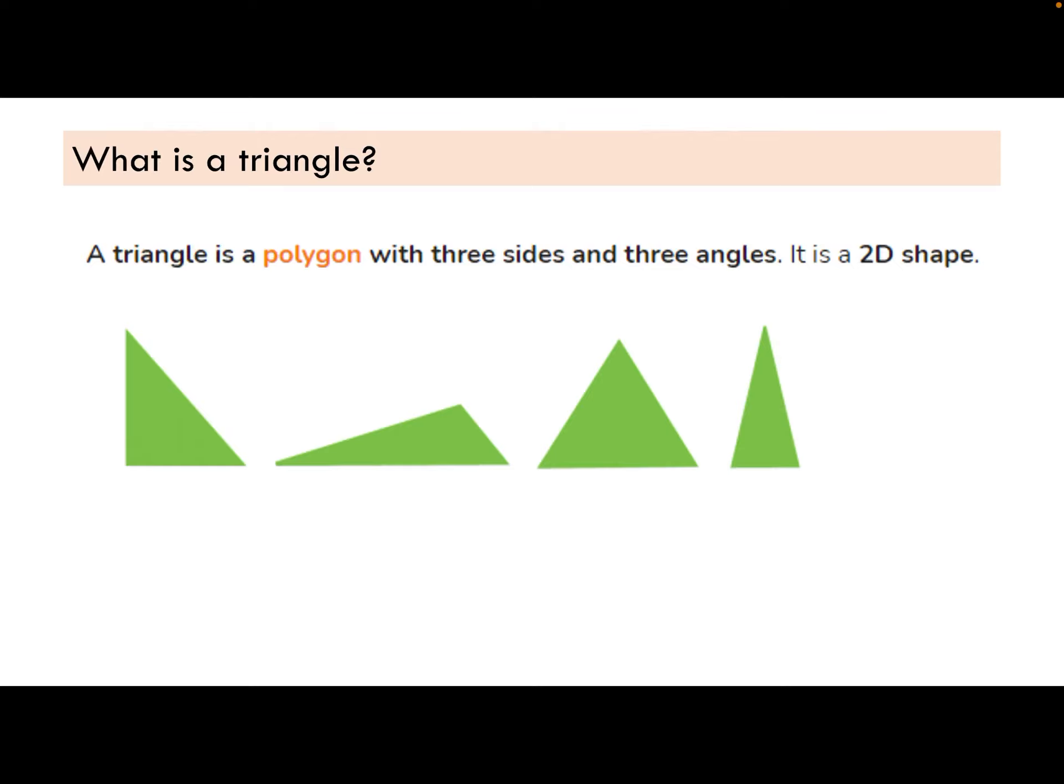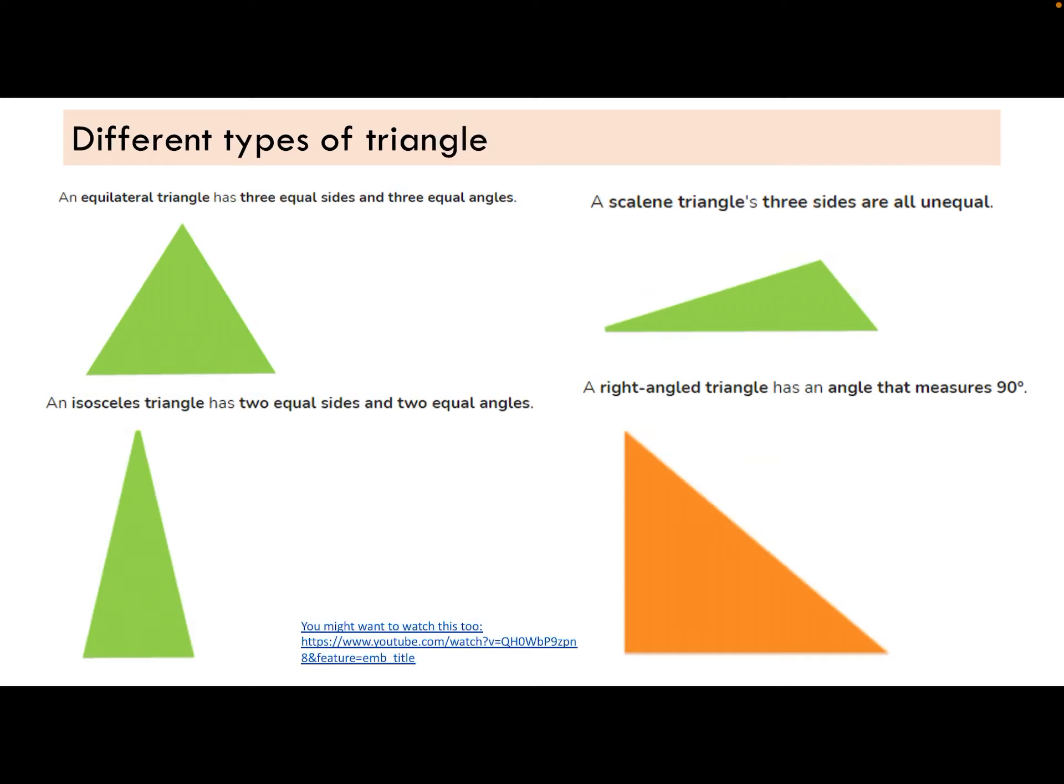So let's have a look at what a triangle is. A triangle is simply a polygon with three sides and three angles. It's a 2D shape. We know it's a 2D shape because it's a polygon. Remember, it has to be a closed shape as well.